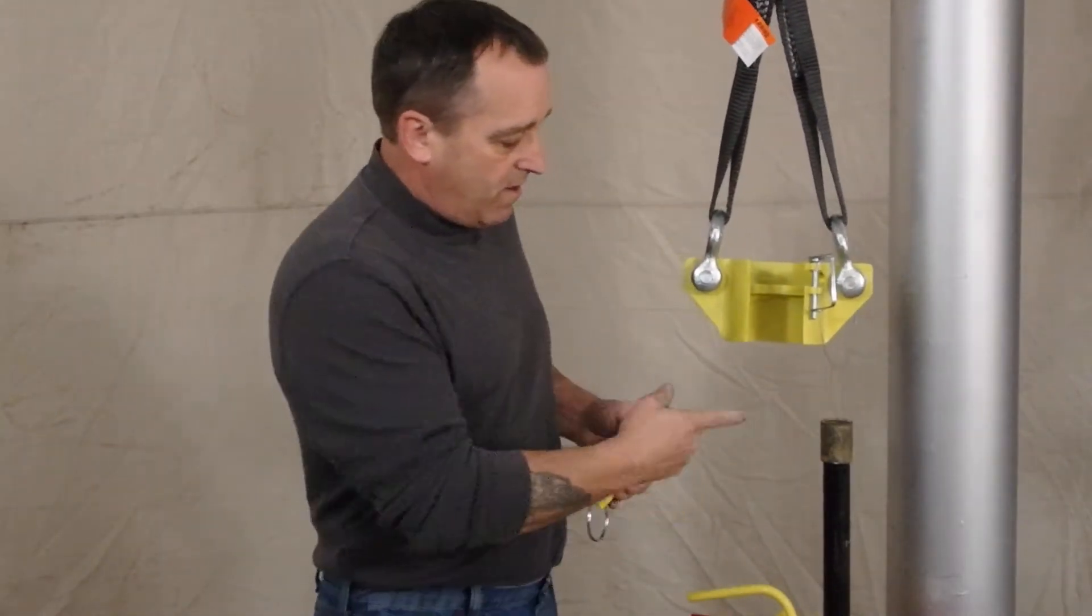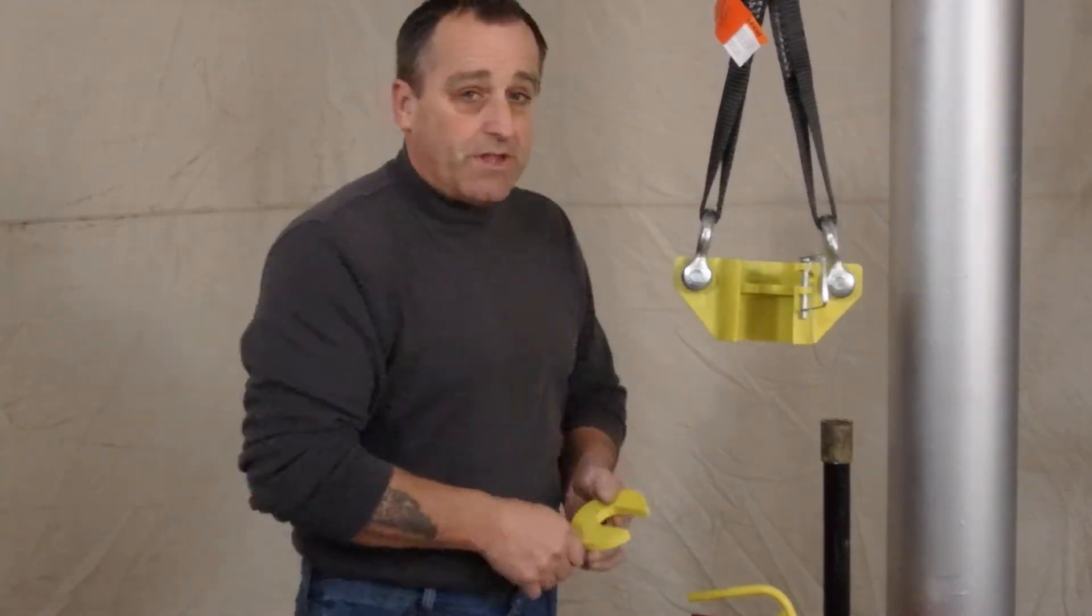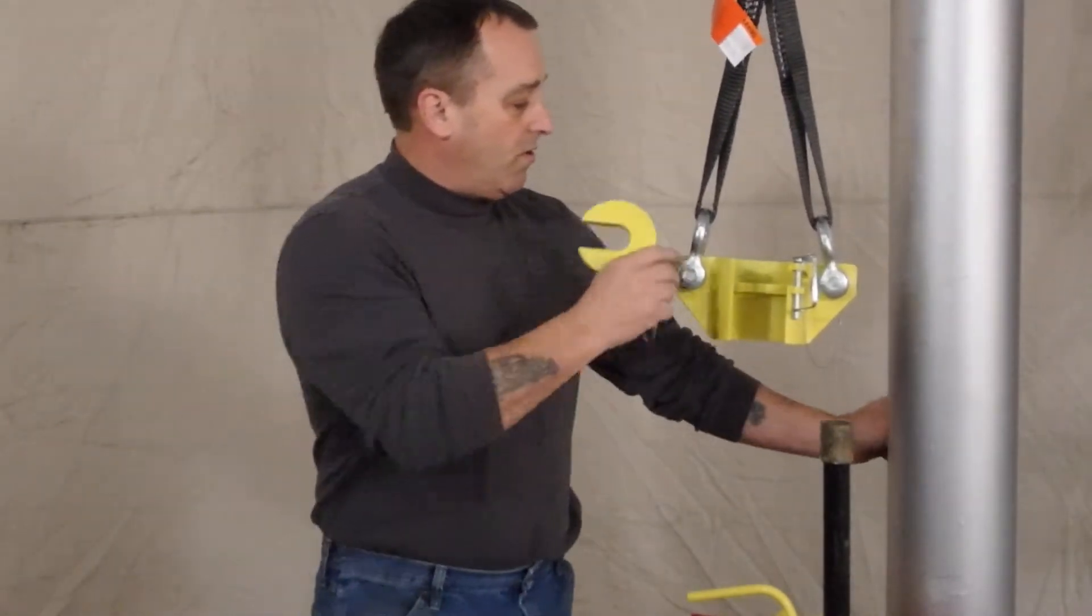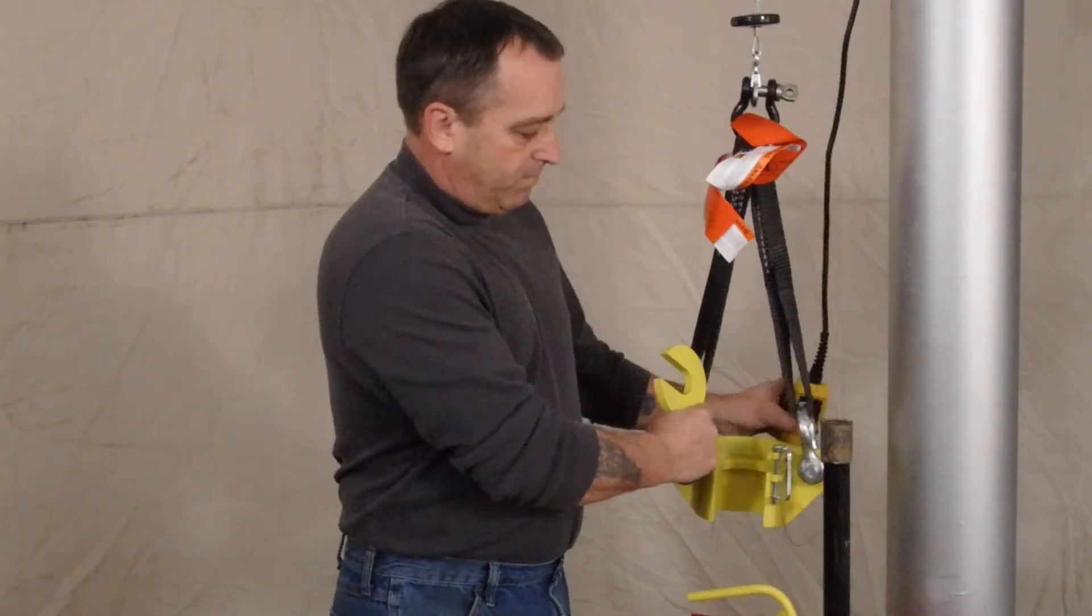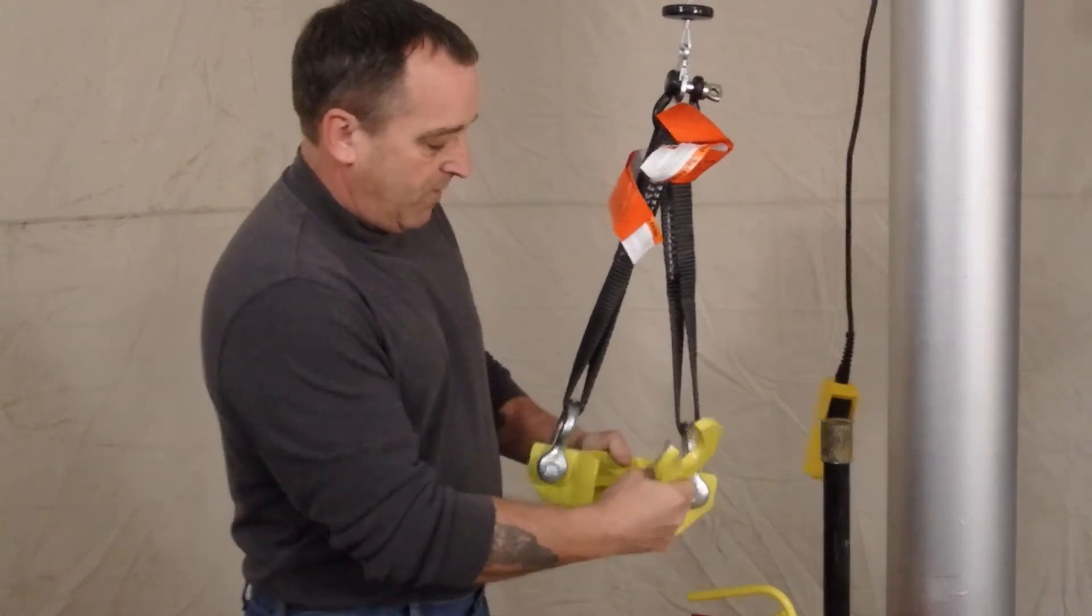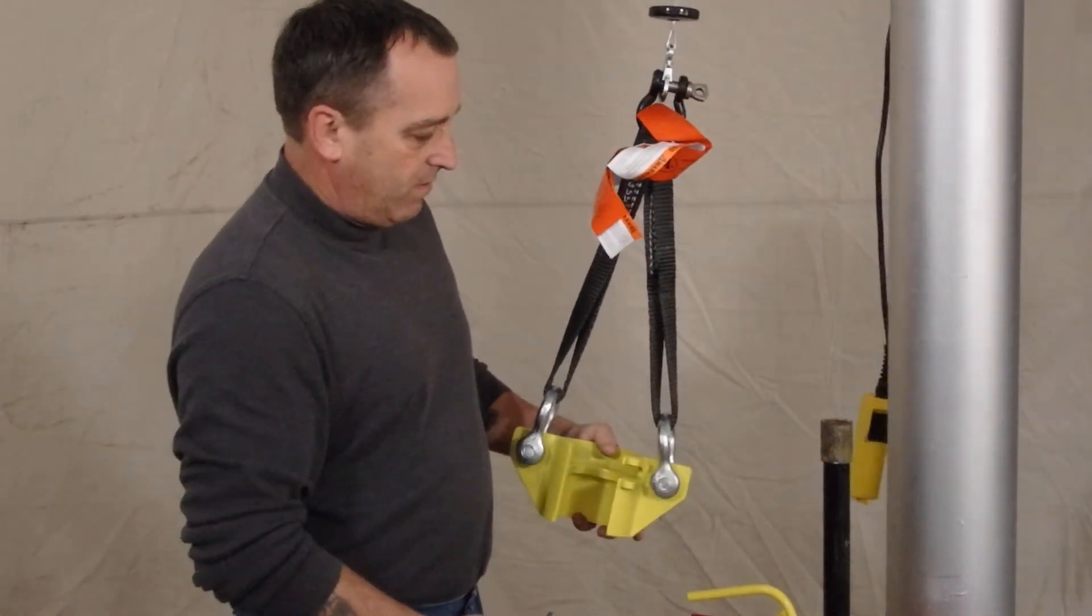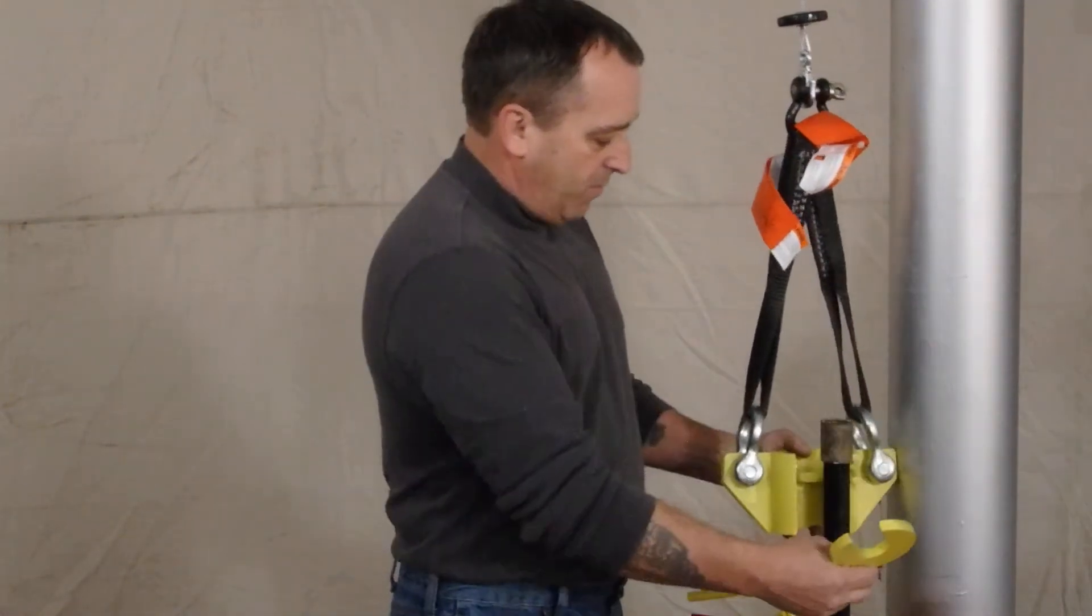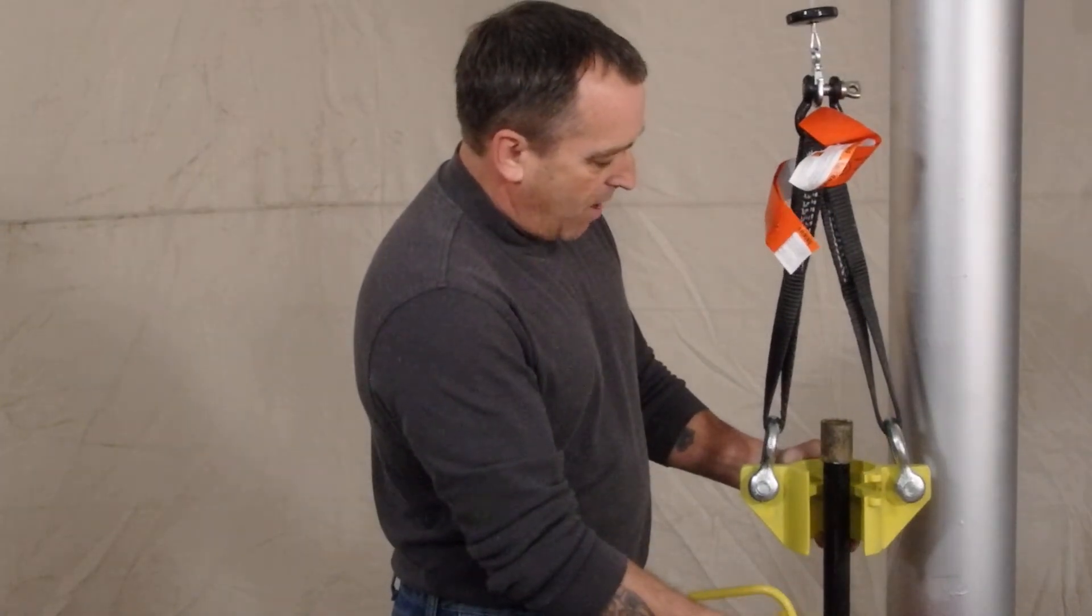So we have it set up here. We have a one inch drop pipe simulated. We're going to lower our body here, remove the safety pin, simply replace the body around the pipe,